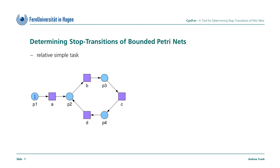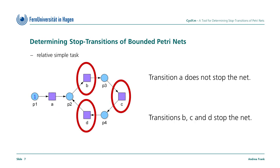Initially, I'd like to talk briefly about stop transitions of bounded nets. To determine stop transitions in bounded Petri Nets is relatively simple. As an example, we consider this bounded Petri Net, which contains a cycle. Of course, transition A does not stop the net. On the other hand, all transitions in the cycle, so B, C and D, are stop transitions.